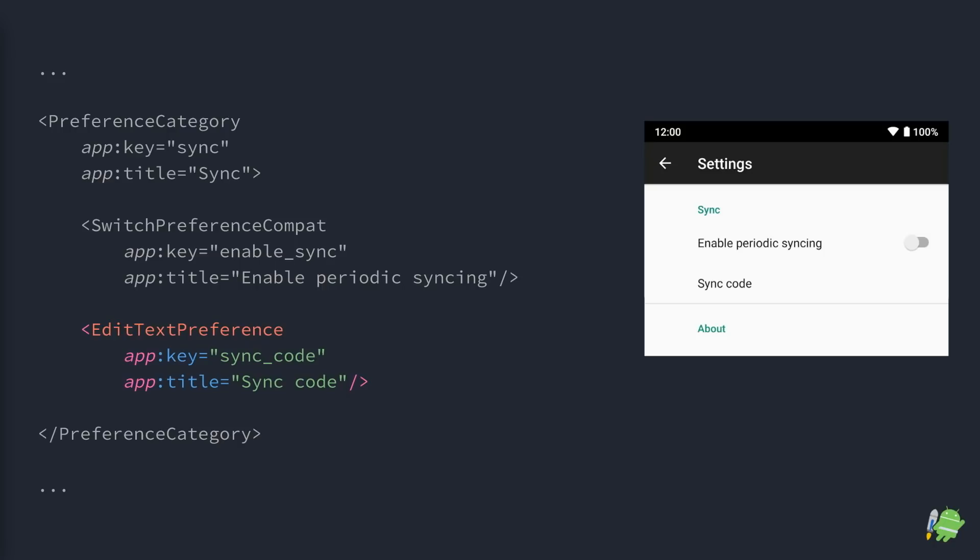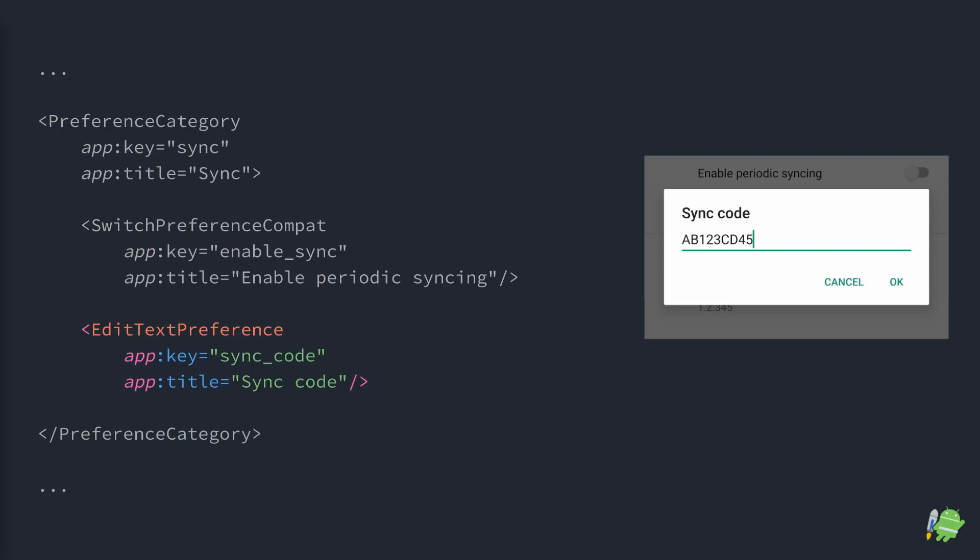Next, we're going to add an EditTextPreference, similar to a SwitchPreferenceCompat in that it's a subtype of preference. This preference uses a dialog to allow persisting a string value. So when the user taps on this preference, we automatically open a dialog for you which contains an editable text field. And when the user taps OK, this value is then persisted.